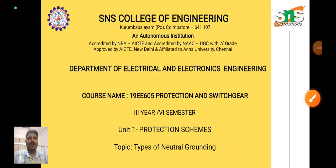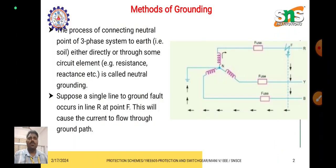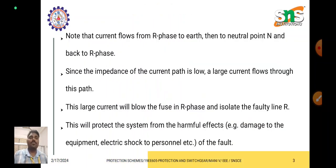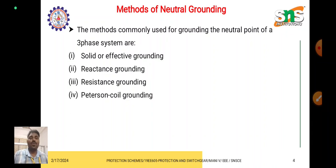Hi everyone, welcome back. Today we are going to see the different types of neutral grounding. Grounding is the process of connecting the neutral point of a three-phase system to the ground. The methods commonly used for grounding of the neutral point are four types.